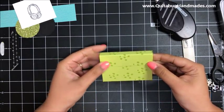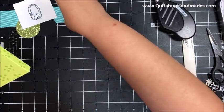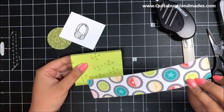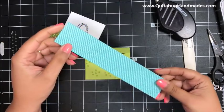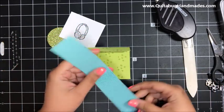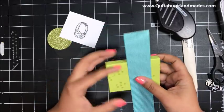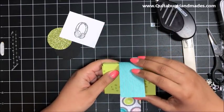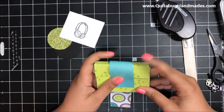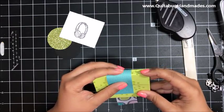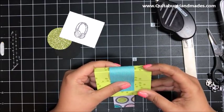I've got a little belly band here that we're going to wrap around. This is some of that Bubbles and Fizz designer paper. This piece has Bermuda Bay on the front. I'm going to wrap this around and pinch it to make my own score lines because we want this belly band to be able to slide off. I don't want it too tight.